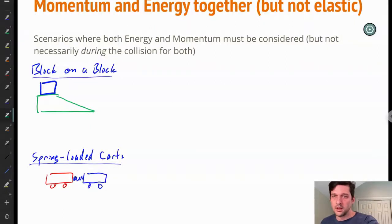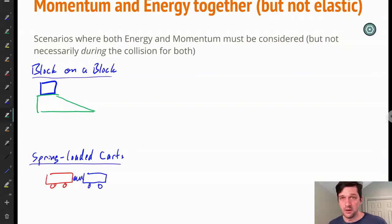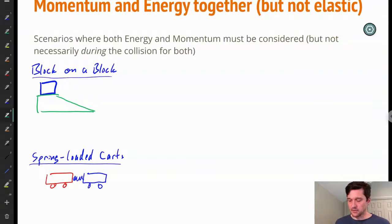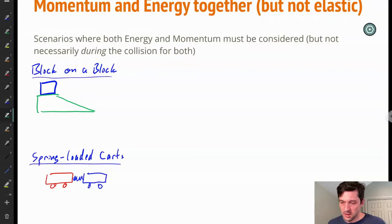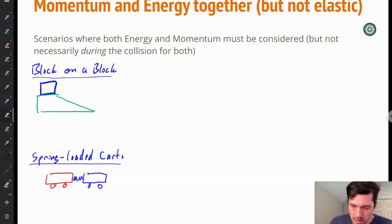Welcome. We're going to talk about certain kinds of collisions where both momentum and energy are involved, but not necessarily at the same time — meaning at the collision point itself. Unlike elastic collisions, which we'll talk about very soon, these are ones where energy has to be paid attention to, but not in quite the same way as it would be in an elastic collision.